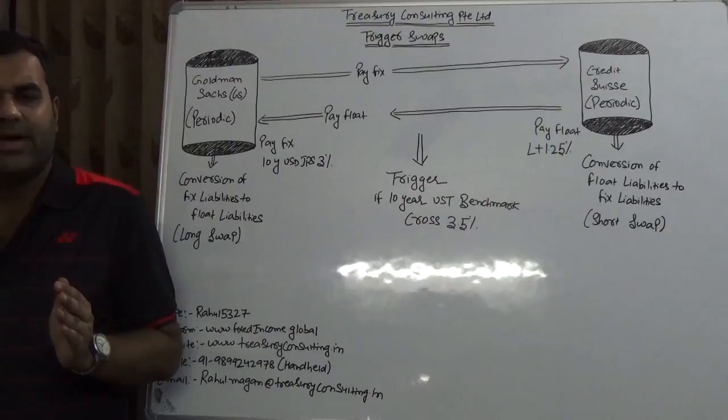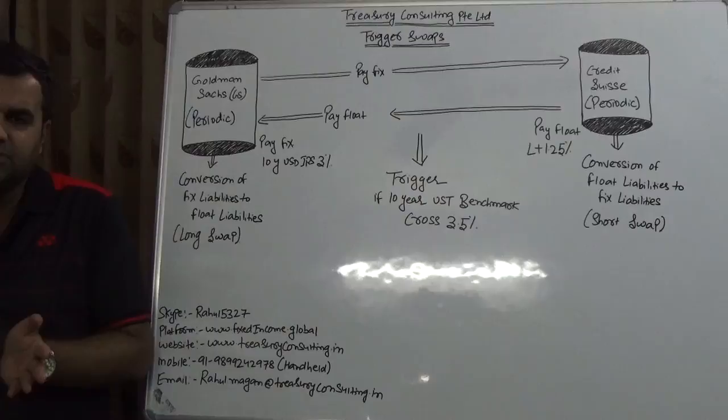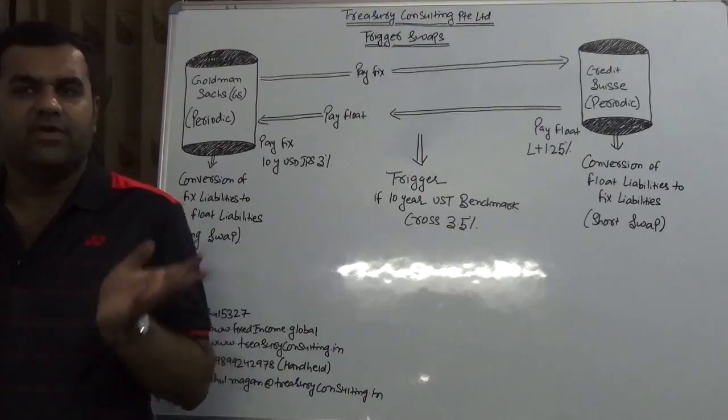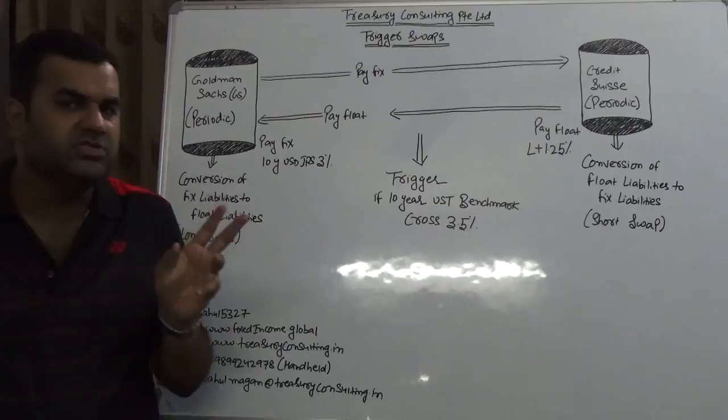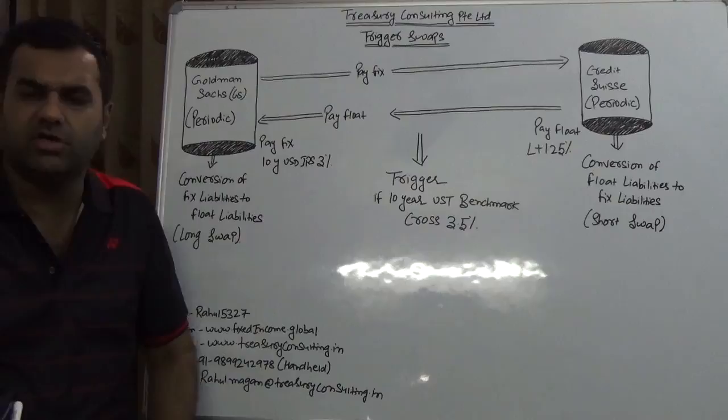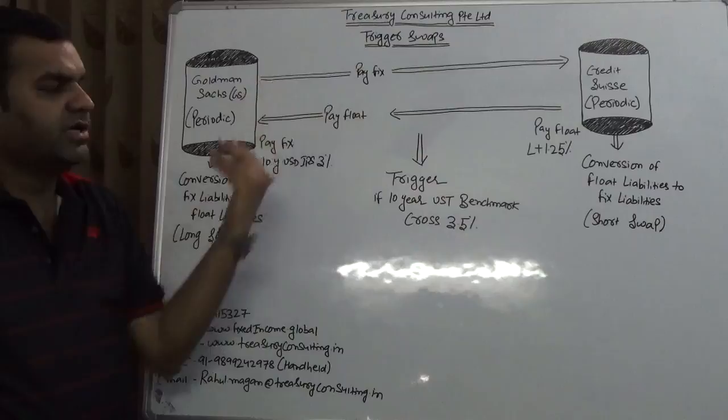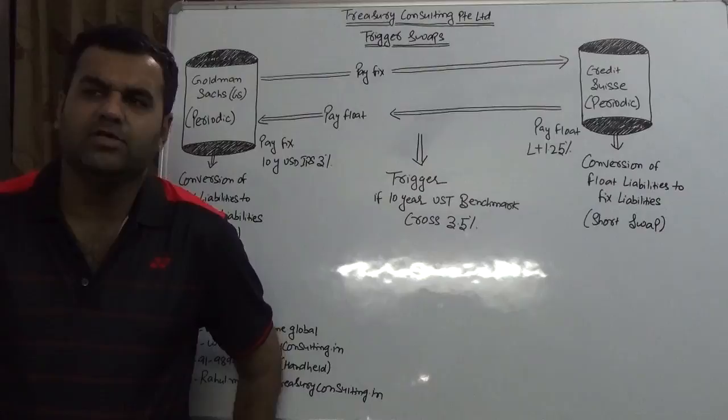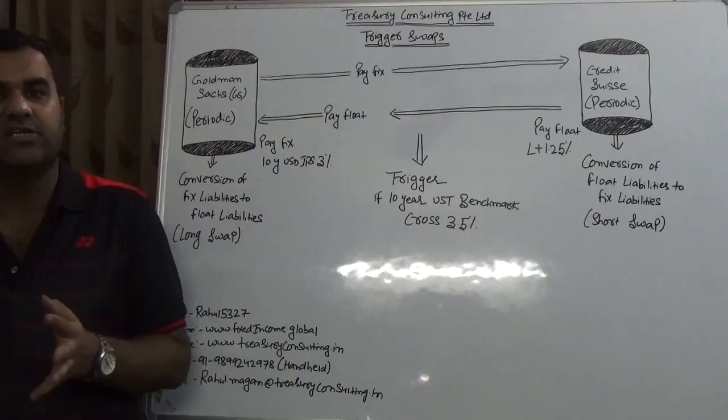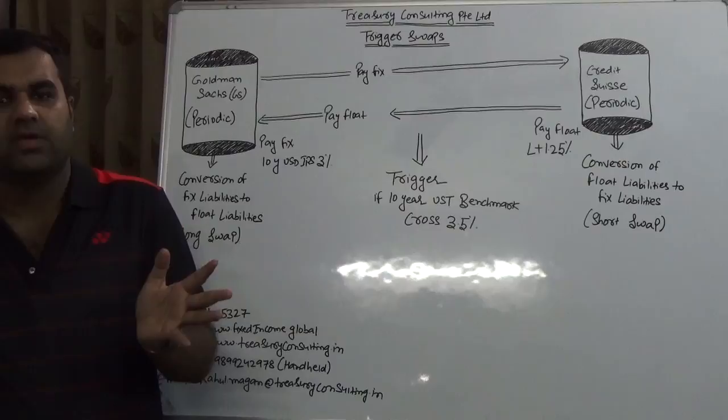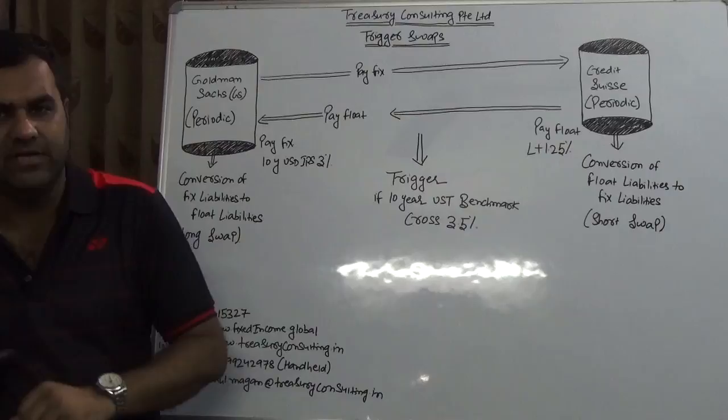In a total return swap, banks exchange flows, sometimes including capital appreciation and depreciation, sometimes excluding it. Once they're exchanging flows, the only concern for them is default. If I use an example between Goldman Sachs and Credit Suisse, Goldman will continue to pay one side, Credit Suisse another side. The only issue is if there's a default, either Goldman or Credit Suisse defaults, or there's a sudden shock in the market causing huge capital depreciation which forces the other party to wind up the deal.